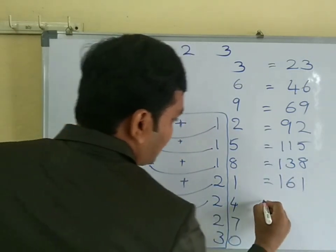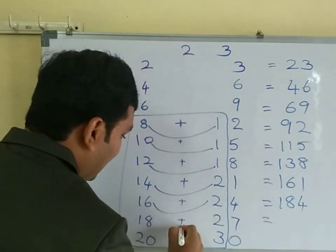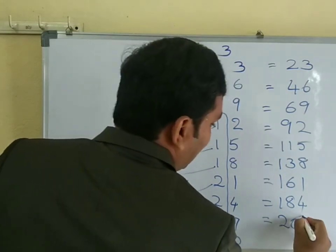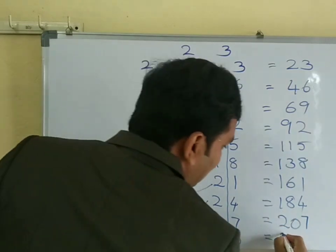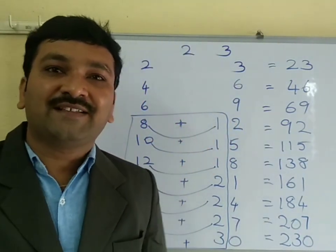Here 16 plus 2 is 18, 4. Here 18 plus 2 is 20 and 7. The last one, 20 plus 3 is 23, 0. Now I got a 23 table.